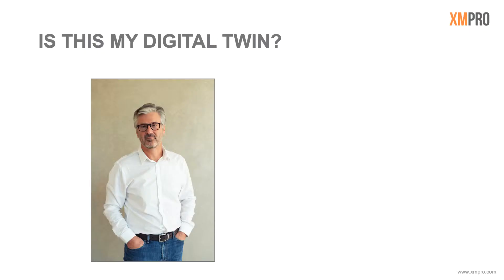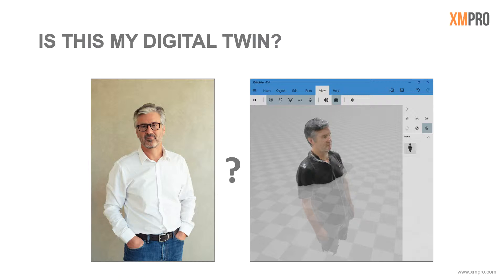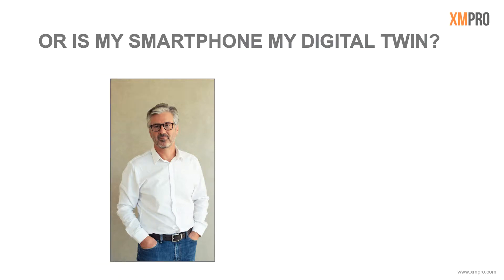If you look at a digital twin for myself — this is me. A couple of years ago at a Microsoft Inspire event, they had a setup where you could stand on a rotating disk with kinetic cameras. As the disk spun, it took a 3D image of you. Now I have a 3D model of myself. But is this really a digital twin? I came to the conclusion that my smartphone is probably a better representation of a digital twin than that 3D model.